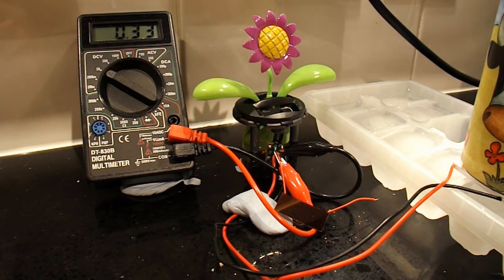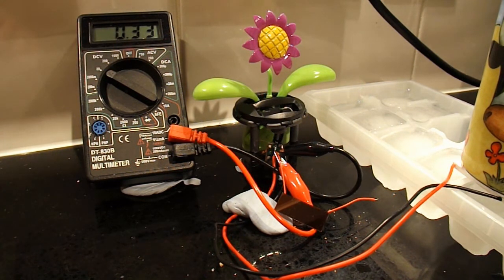So I think I need a few more of those cells if I want to generate enough voltage to drive the flower. I don't think a third of a volt is quite going to do it for me.